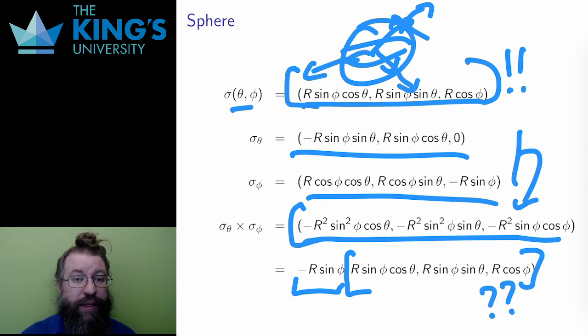The key idea to remember in all of this is that I'm calculating a vector which is perpendicular to the surface at all points. The results, though complicated, should match that expectation as they do here for the sphere.